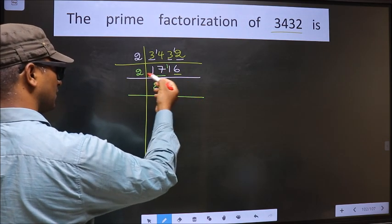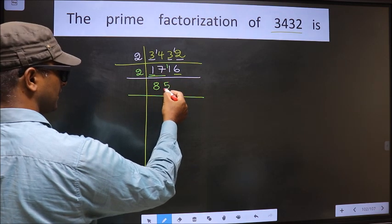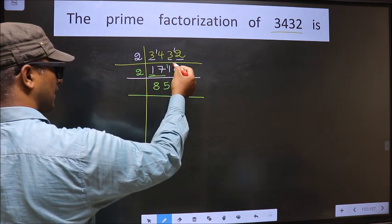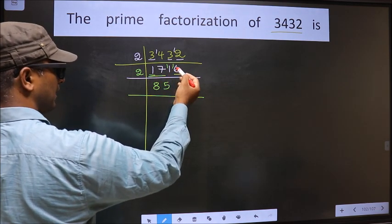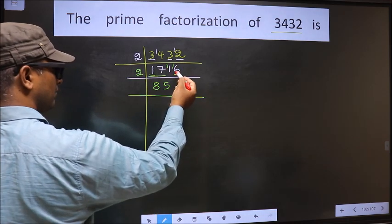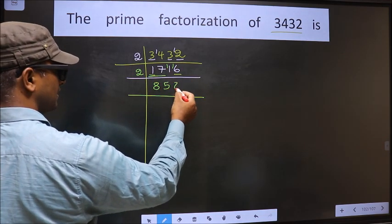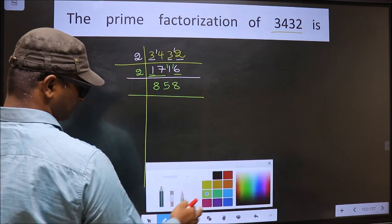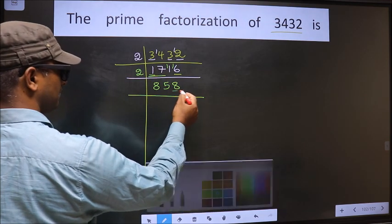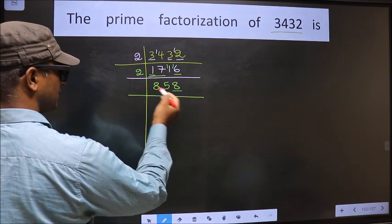A number close to 11 in the 2 table is 2 fives, 10. 11 minus 10 is 1, carried forward making it 16. When do we get 16 in the 2 table? 2 eights, 16. For this number, the last digit is 2, which is even.